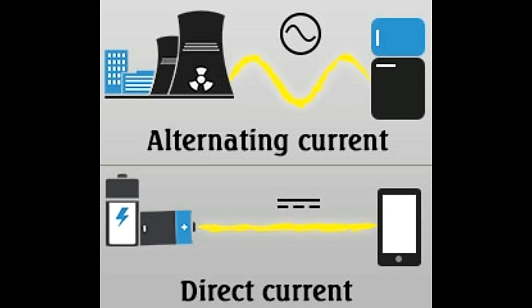If you are a student, the frequency of DC is normally asked as trivia. The fact is DC or direct current has zero frequency.